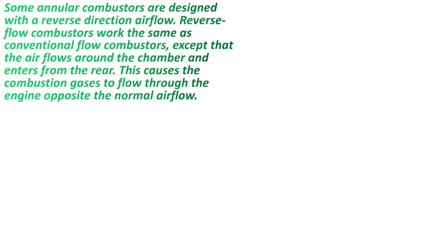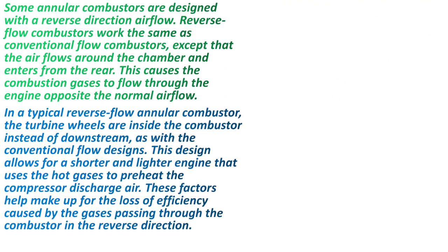Some annular combustors are designed with a reverse direction airflow. Reverse flow combustors work the same as conventional flow combustors except that the air flows around the chamber and enters from the rear, causing the combustion gases to flow through the engine opposite to the normal airflow. In a typical reverse flow annular combustor, the turbine wheels are inside the combustors instead of downstream as with the conventional flow design. This allows for a shorter and lighter engine that uses the hot gases to preheat the compressor discharge air, helping make up for the loss of efficiency caused by gases passing through the combustor in the reverse direction.